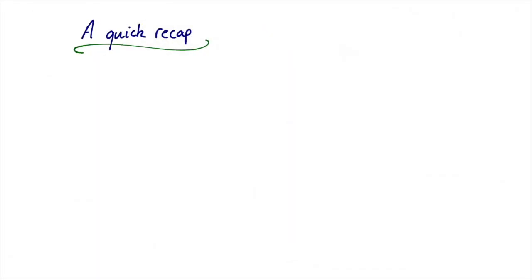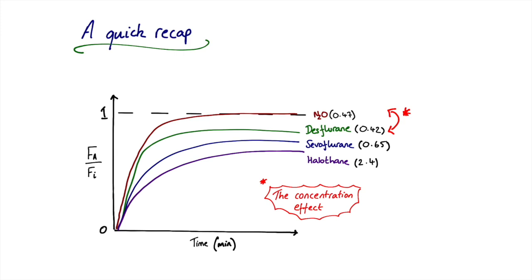By way of a quick recap, we saw in the last video on blood gas partition coefficients that the general trend was one of reducing number for the blood gas partition coefficient corresponding to more rapid onset of action, more rapid achievement of equilibrium. The one that bucked the trend was nitrous, where despite having a larger blood gas partition coefficient at 0.47, it was still faster onset than desflurane at 0.42. This difference, this going against the trend, was a consequence of the concentration effect.